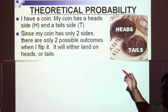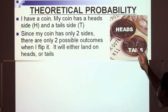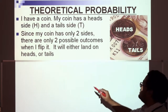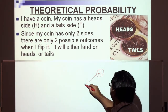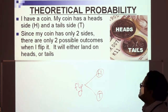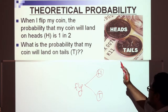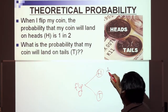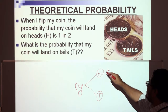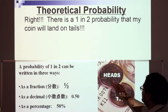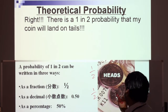First, theoretical probability. I have a coin with a head side and a tail side. Since my coin has only two sides, there are only two possible outcomes when I flip it — it will either land on heads or tails. The probability that my coin will land on heads is one in two, and there is a one in two probability it will land on tails. One half heads and one half tails.